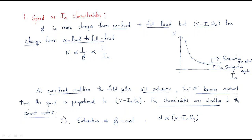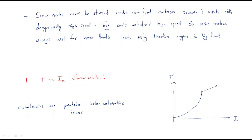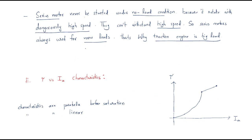Saturation is a rare case since we do not normally operate in overload. Most importantly, DC series motors must never be started under no-load condition, because they rotate at dangerously high speed under no load and cannot withstand it. The series motor should always be used with more load — traction engines are a big load, which is why the DC series motor has major applications in traction.